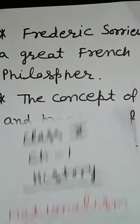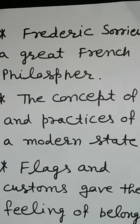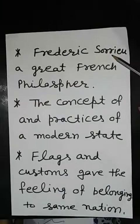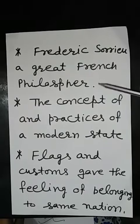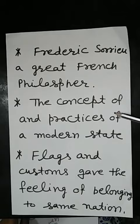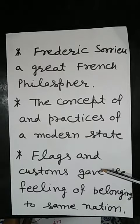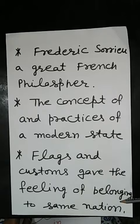From the starting of the chapter, a picture is shown — which was prepared by Frederick Souriau, who was a great French philosopher. He established the concept and practices of a modern state, and by the use of flags and customs, he gave the feeling of belonging to the same nation. Let us know this picture in detail.